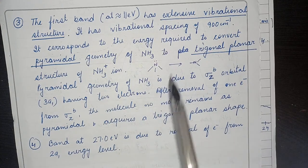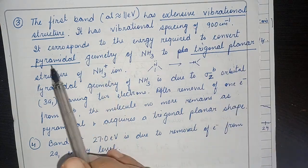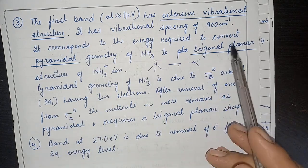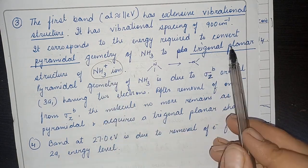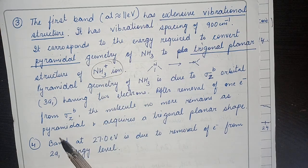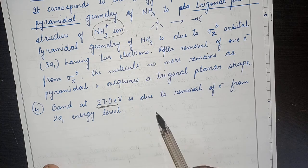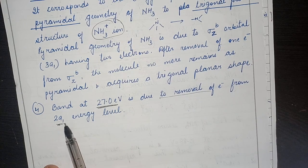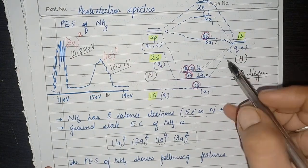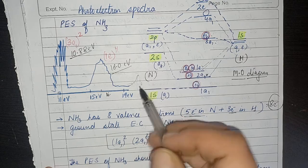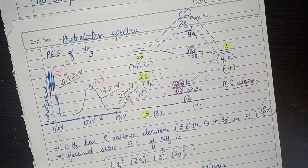The first band at around 11 eV shows extensive vibrational structure because the pyramidal geometry of ammonia converts into the trigonal planar geometry of NH₃⁺ after removal of one electron. There is also one more band at 27 eV, not shown in this diagram, which is due to removal of an electron from the 2a1 level. This completes the photoelectron spectra of the ammonia molecule.